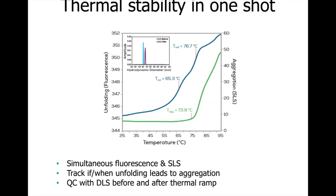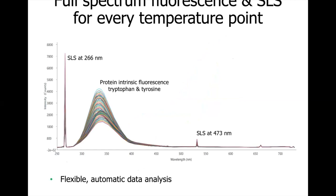One of the most powerful tools in the UNCLE for formulation screening is the TM-TIAG application, which is used to obtain protein thermal unfolding and aggregation information in a single experiment. Protein intrinsic fluorescence and SLS are monitored simultaneously as the temperature increases, and DLS data is gathered before and after the thermal ramp. The fluorescence thermal profile allows for determination of the midpoints of unfolding events, and the SLS data gives information about the onset of aggregation expressed as T-Ag. The simultaneous measurements help correlate protein unfolding with aggregation events over a temperature course.